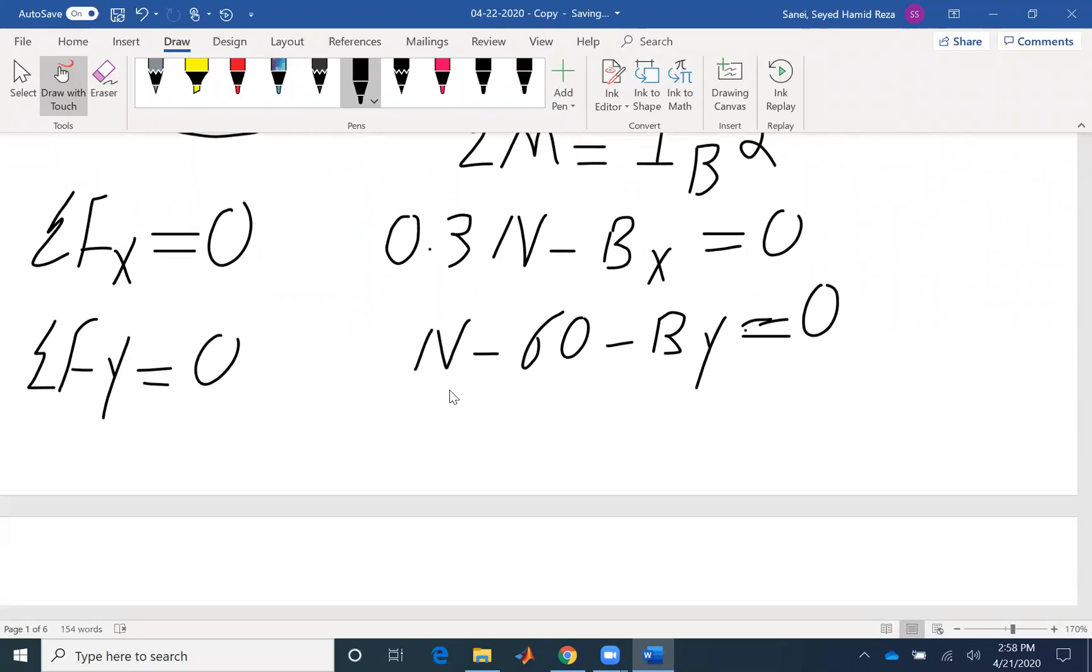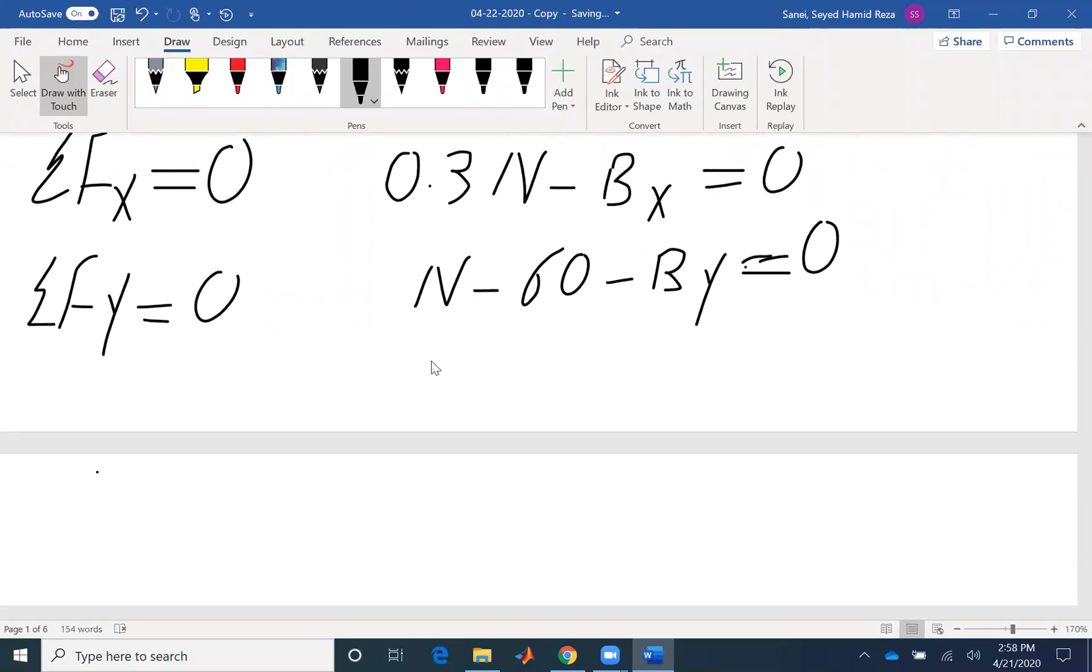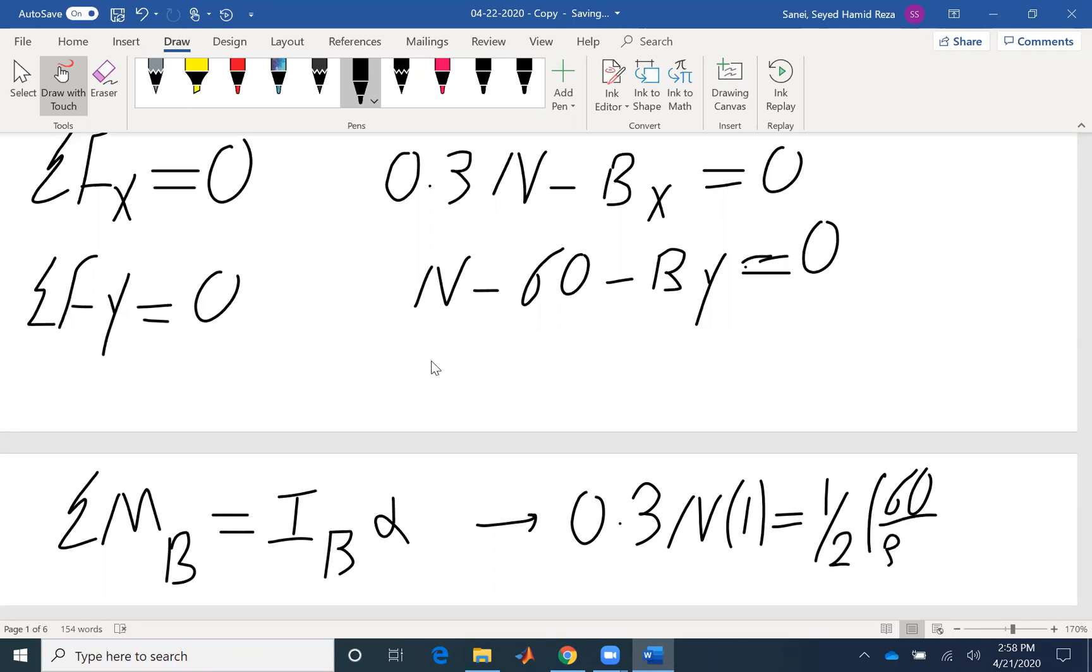Summation of moment would be my third equation. Summation of moment about point B equals IB·α. The only force creating a moment would be the friction force. It's creating counterclockwise. The magnitude is 0.3N. The moment arm R is the radius of our disk, which is one. Moment of inertia of a disk is ½MR². I have the weight, so I divide it by 32.17 to get the mass in slugs. R is 1 and then alpha.